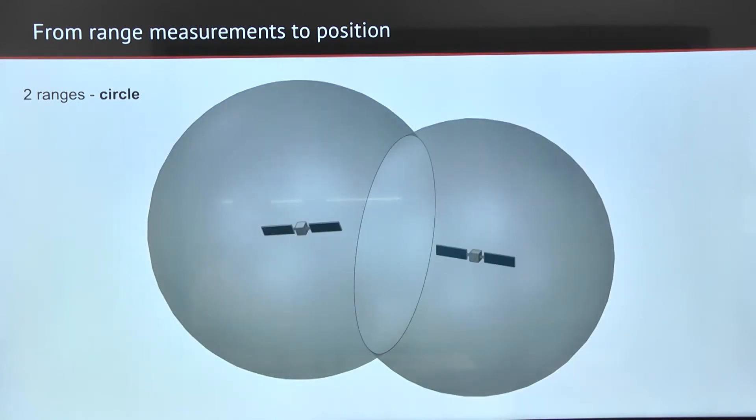If we measure the range from two satellites, we can be anywhere on the intersection between those ranges.